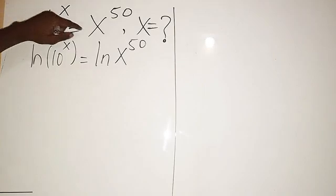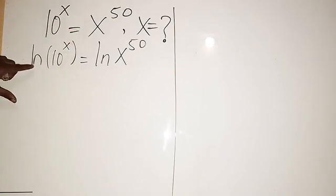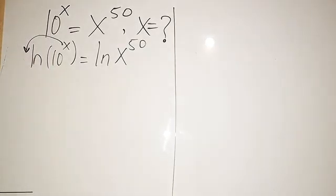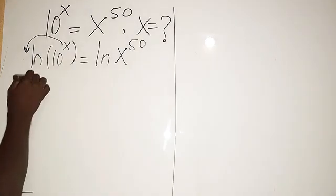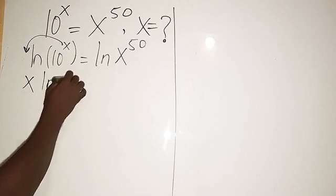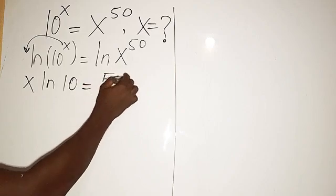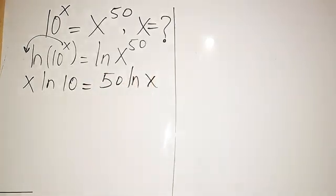So 10 to power x equals x to power 50. Taking the ln of both sides, we're going to have this. Now from there you can see this x will come there to multiply, so it's going to be x ln of 10 equals the same thing here, 50 ln of x.